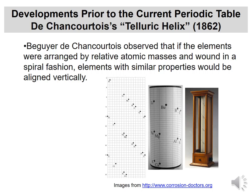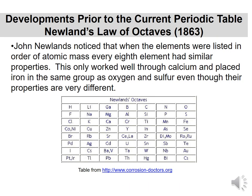Next we go to 1862 — about 50 years later. Chancourtois said if you line elements up on a spiral, the ones that are vertical — lithium, sodium, and potassium — tend to have similar properties, just like carbon and sulfur, silicon have similar properties. This big spiral kind of lines them up and lets us see what we're looking at.